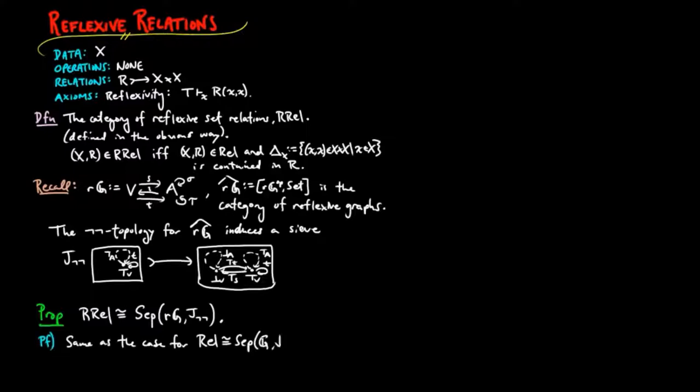And so we also have that the category of reflexive relations is a Grothendieck quasi-topos. Furthermore, we have the following result.